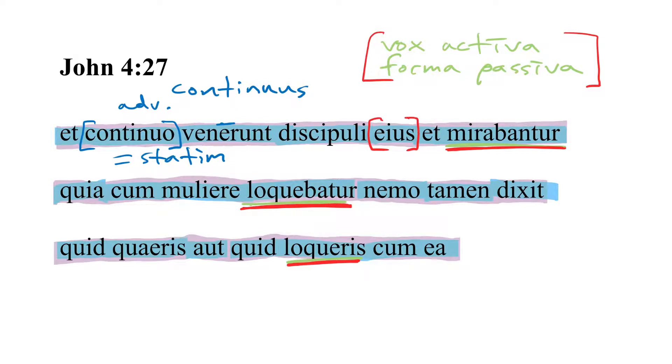And here's our first deponent verb, mirabantur. This is from miror, mirari. This is a first conjugation deponent verb meaning to be full of wonder, or to admire something, or to be astonished at something, to be surprised, amazed. All of those can work depending on the context. So let's just parse this to make sure we're on the same page.